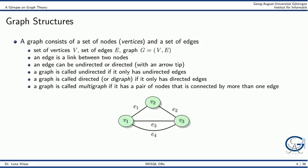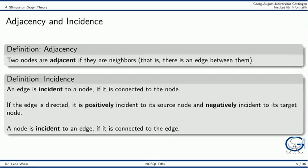We will also consider the case of a multigraph, which means there can be more than one edge between any pair of nodes. We now come to the two central terms: adjacency between a pair of nodes, and incidence between a node and an edge. Two nodes are called adjacent if they are neighbors — that is, there is an edge between them.